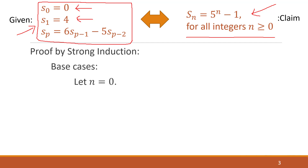We'll first look at the case when n = 0. From the recurrence relation, s(0) = 0. Looking at our closed form formula, 5^0 − 1 = 1 − 1 = 0. Since those two match, this base case works.